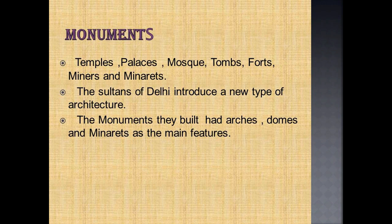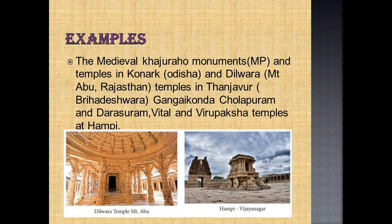Temples, palaces, mosques, forts, tombs and minarets are collectively called monuments. The Sultans of Delhi introduced a new type of architecture — the monuments they built have arches, domes and minarets as main features. The medieval Khajuraho monuments and the temples in Konark and Dilwara constitute valuable sources to understand the religious and cultural evolution in northern India. Temples in Thanjavur, Gangaikondacholapuram and Darasuram symbolize the magnificent structures the later Cholas built in Tamil Nadu. The Vittala and Virupaksha temples at Hampi similarly speak of the contributions of Vijayanagara rulers.